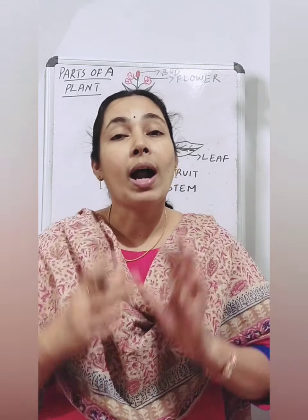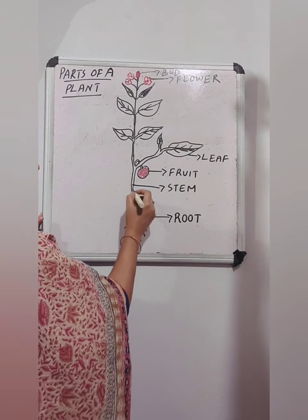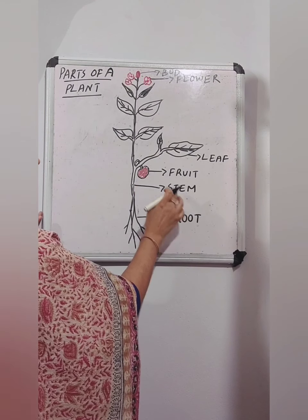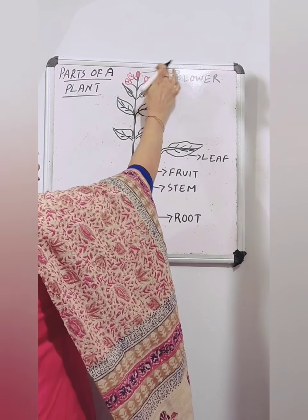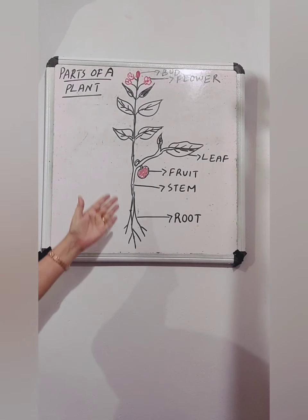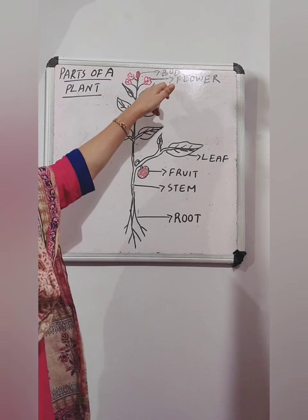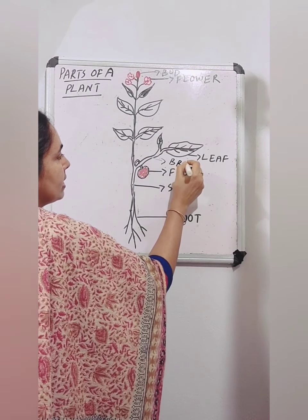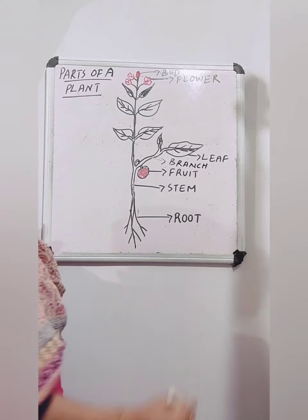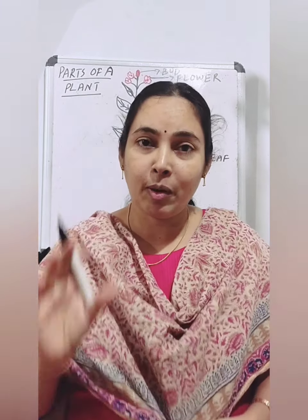First, let's look at what the parts of a plant are. Look at this picture. This is the root of a plant. Then we can see the stem, fruit, leaves, flowers, and buds. So the parts of a plant are: root, stem, fruit, leaf, flower, and buds. And branches also — big plants have branches. You should draw the parts of a plant.